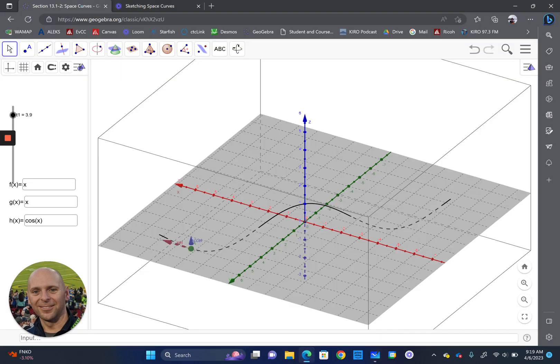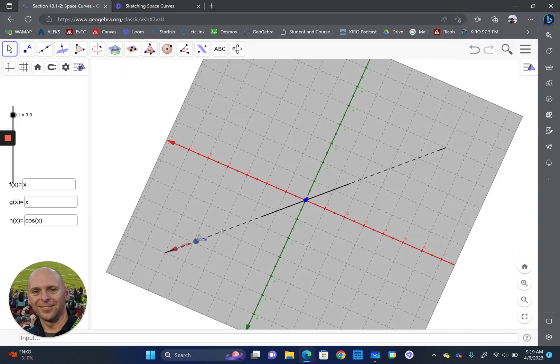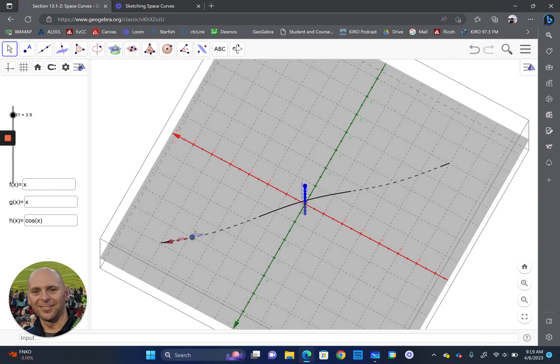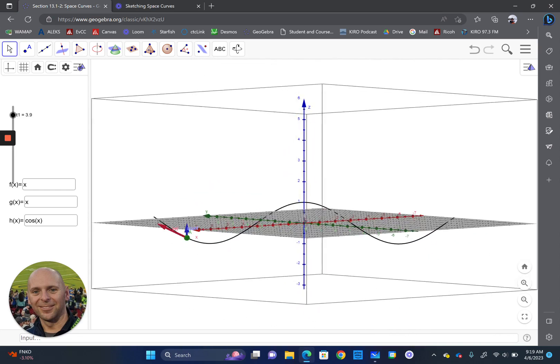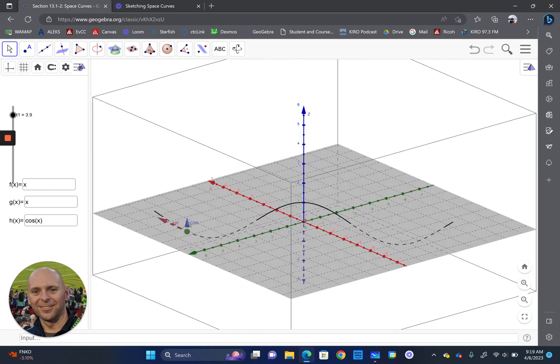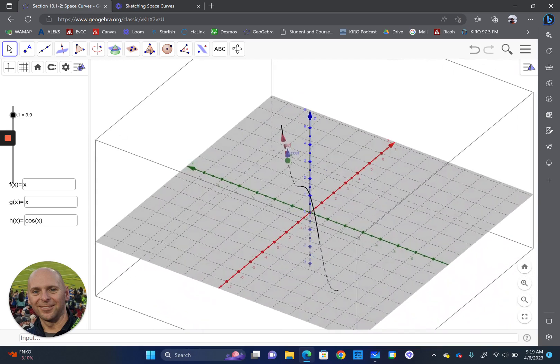I'm going to graph this in GeoGebra so we can get a better picture of it. Looking from the top down, there's our line y equals x. Looking horizontally, we see our cosine function happening. And this is how the space curve is being traced out.